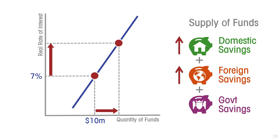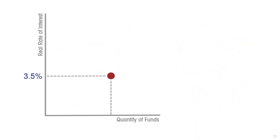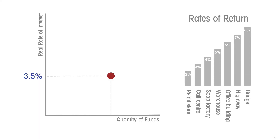Let's now establish that the demand for funds curve is downward sloping. At any time there is a variety of potential investment projects with a variety of rates of return. If the rate of interest is low, it is more likely that a large number of projects will yield a return higher than that low rate of interest, so there will be great demand for investable funds and great demand for loans to finance these investment projects.